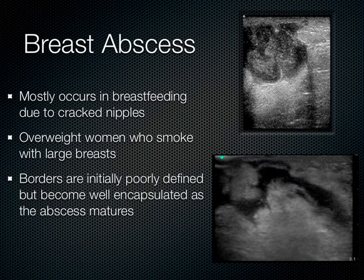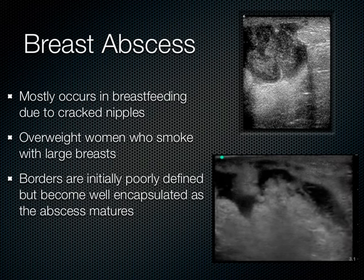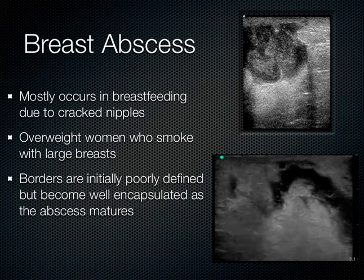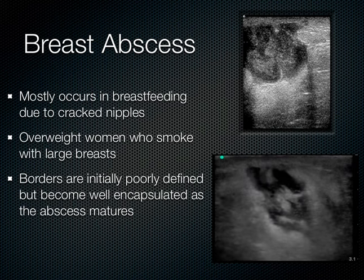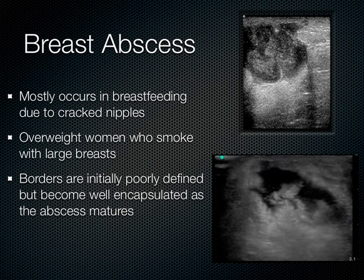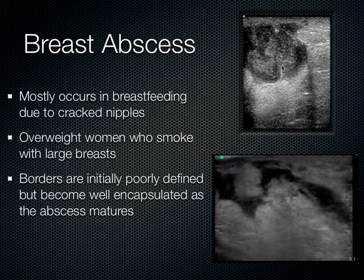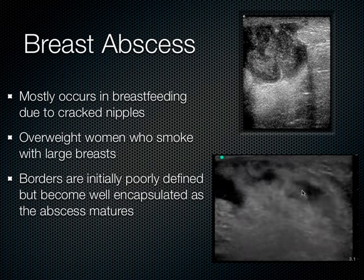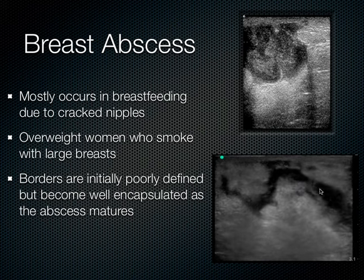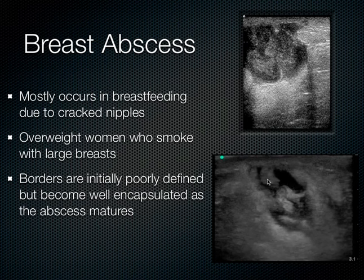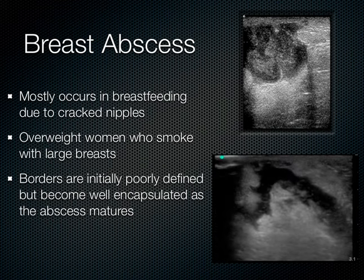Breast abscesses are something an emergency physician sees quite often. They're usually associated with breastfeeding from cracked nipples, and can also occur in overweight women who smoke and have large breasts. Like every other abscess, the borders are initially poorly defined, but if it grows for a long time it can become encapsulated. You can see low-level echoes and hypoechoic debris. On a video image, when compressed, the debris swirls around — that's what pus looks like on ultrasound. Ultrasound can guide the drainage.